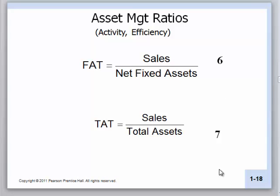The next set of efficiency ratios reflects more a relationship to sales and the asset base. Fixed asset turnover talks about how well we use the fixed assets we've purchased to generate sales. Of course, we would like this number to be bigger rather than smaller, though sometimes we don't have much control over it. Total asset turnover looks at total assets rather than just the fixed asset component.